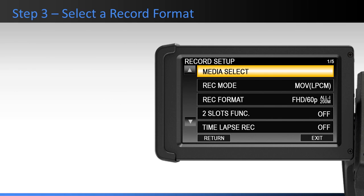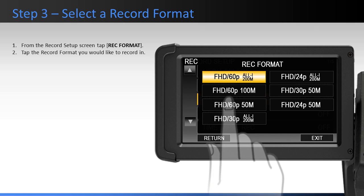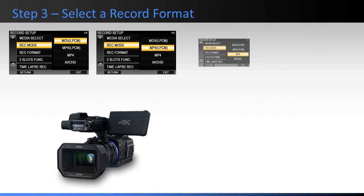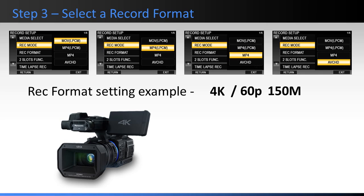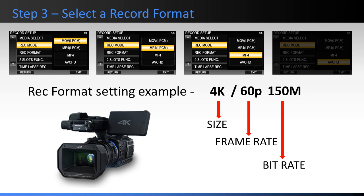Once you have selected a Record Mode, switch the picture quality of the motion pictures by selecting a Record Format. To select a Record Format from the Record Setup screen, tap Record Format, then tap the Record Format that you would like to record in. Depending on the Record Mode setting, the available Record Format settings differ. For all record modes except AVC-HD, the items that make up a Record Format setting represent size, frame rate, and bit rate. Let's explain that a little more by looking at the available Record Format formats for the Record Mode MOV-LPCM.